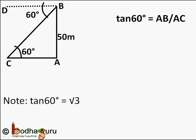That is, tan of 60 degrees is equal to AB by AC. We know tan of 60 degrees is equal to square root of 3, and AB is equal to 50 meters. So replacing the values, square root of 3 equals 50 by AC.